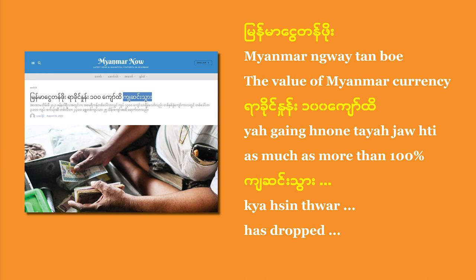In the Myanmar Now article, the value of Myanmar's currency has declined up to more than 100%. The verb cha sen, to decline, is followed by thwa to emphasize the aftermath. This means the Burmese kyat has already lost its value by the set amount, and we're now dealing with the aftermath — the post-decline exchange rate.